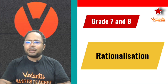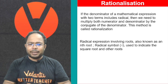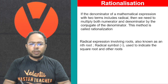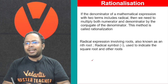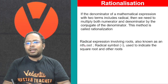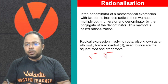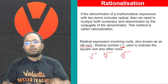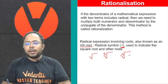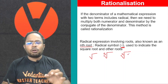Now what is rationalization? If we have any mathematical expression where we find two terms, one of which is a radical — radical expressions involve roots, also called nth roots, like square root and cube root. This symbol is called the radical symbol, and the number or letters inside the radical symbol is called the radicand.